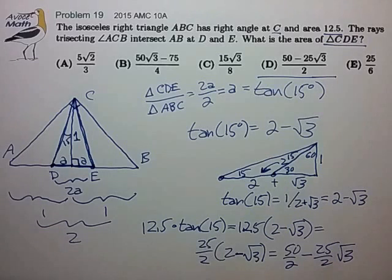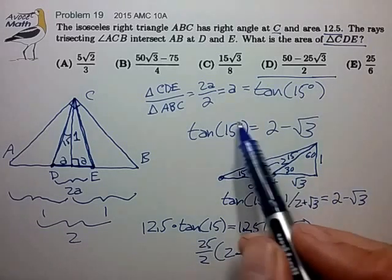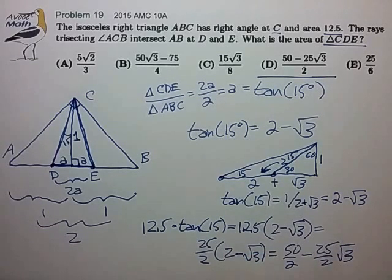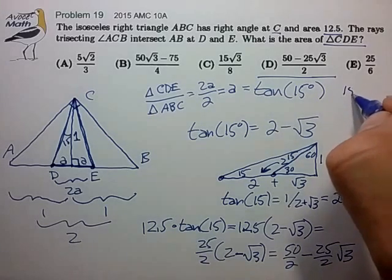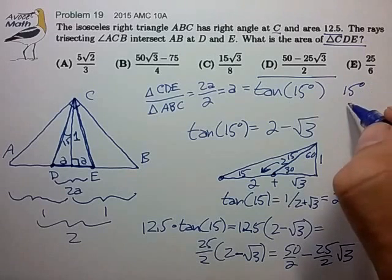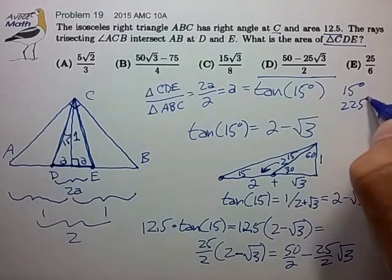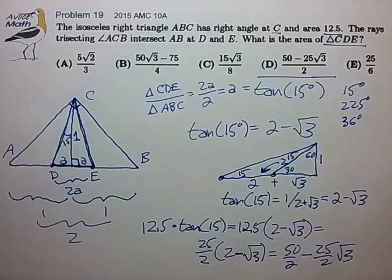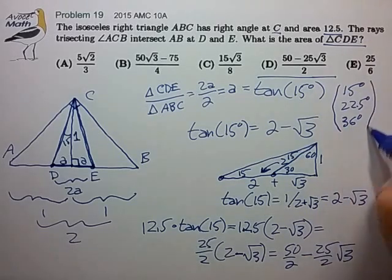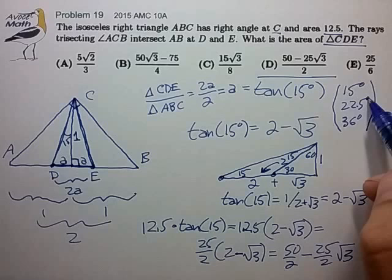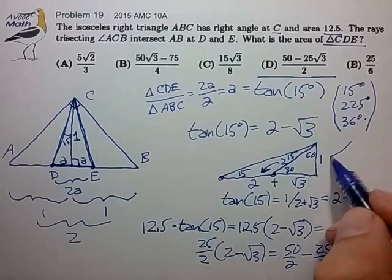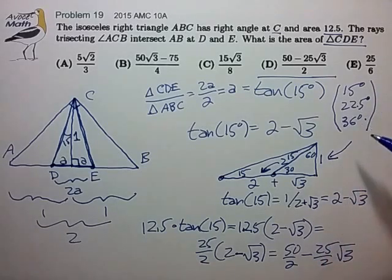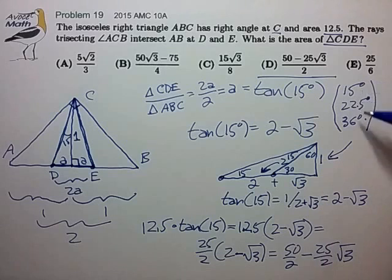Anyway, this is an example where knowing 15 degrees is often helpful for these types of AMC problems. So the angles of 15 degrees sometimes come up, 22 degrees sometimes come up, and also 36 degrees comes up sometimes in these AMC problems. And it's helpful to either remember what the tangents of these angles are or to remember what the constructions are for determining the tangents of these angles. So anyway, pretty good problem. Take care.